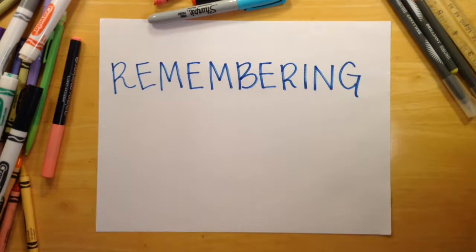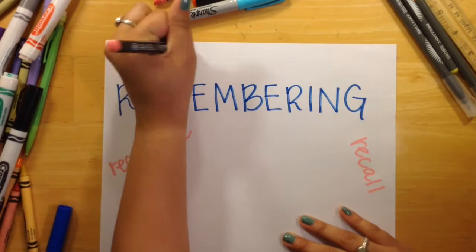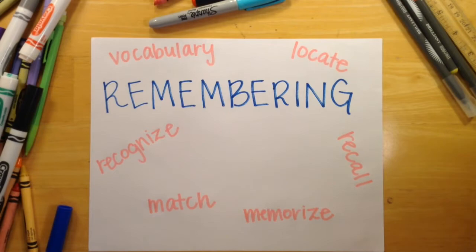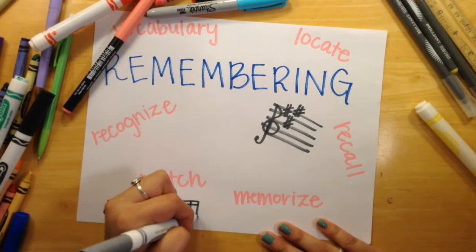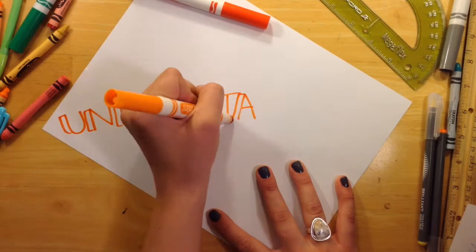In the first category of lower order thinking skills, remembering is utilized in the music setting when students are able to recall or retrieve musical elements or concepts that they learned previously. A few examples of remembering in a music classroom include putting an instrument together, locating musical symbols, remembering the fingerings on their instrument, or recalling how many sharps are in an A major scale. Once students have mastered this knowledge, they are able to move on to understanding.